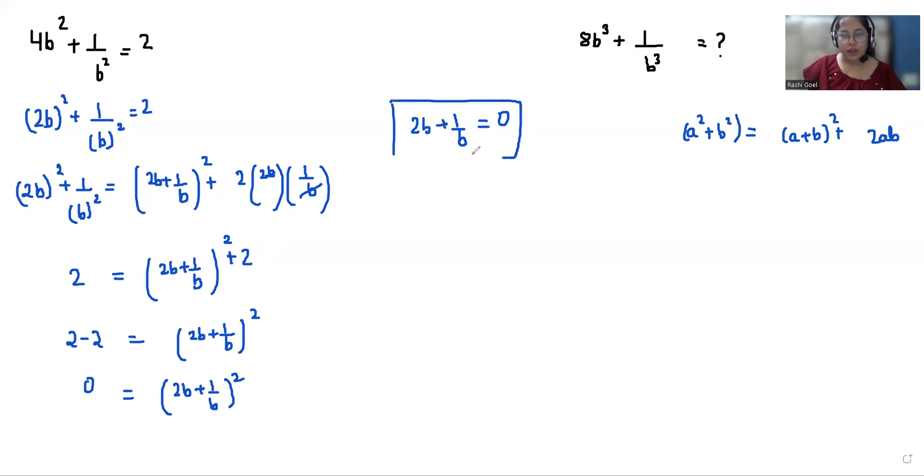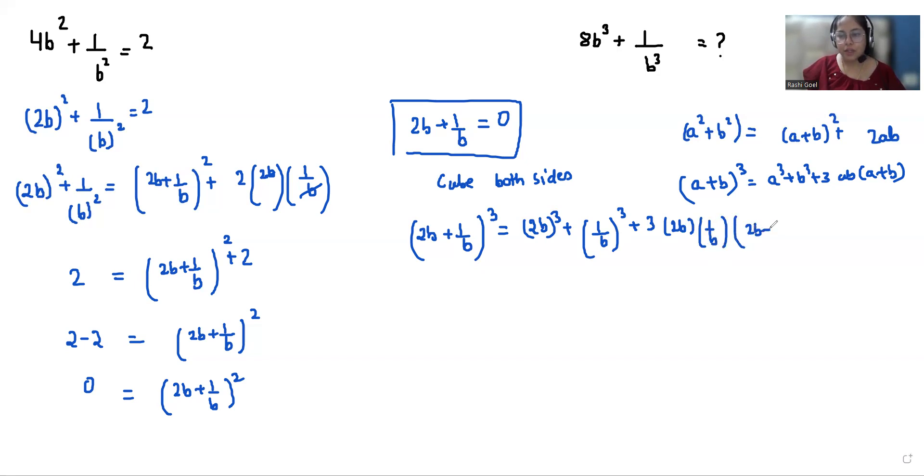Now we are doing cube both sides. 2b plus 1 over b whole cube equals 0 whole cube. Using the formula a plus b whole cube equals a cube plus b cube plus 3ab times a plus b, we get 2b whole cube plus 1 by b whole cube plus 3 times 2b times 1 by b times 2b plus 1 by b.